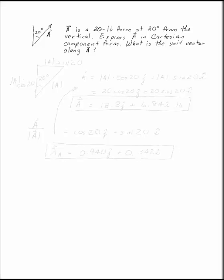Vector A is a 20 pound force at 20 degrees away from the vertical. Express A in its Cartesian component form and find the unit vector along A. The first thing to do is to write A as a Cartesian component vector.